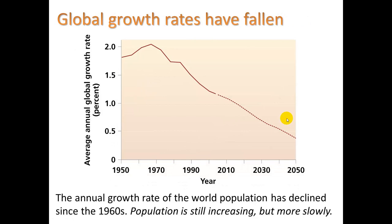We do know that global growth rates have fallen. That peak happening in the mid-1960s — around 1965 — was 2.1%. That's when the population was getting bigger the fastest. Since then, the rate of population growth has declined. Today's growth rate is 1.1%, so population is still increasing, but more slowly.